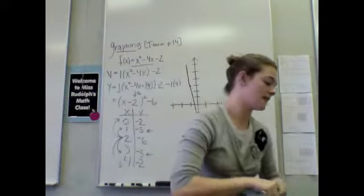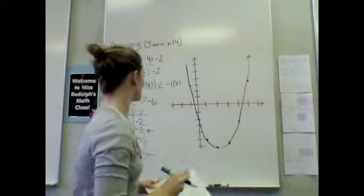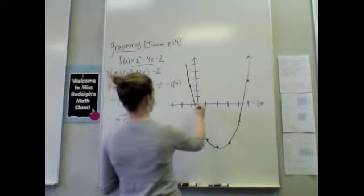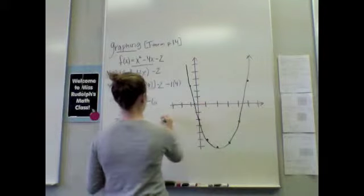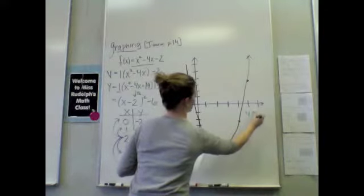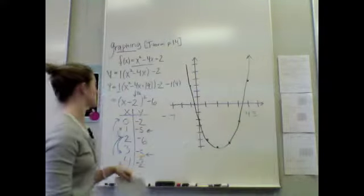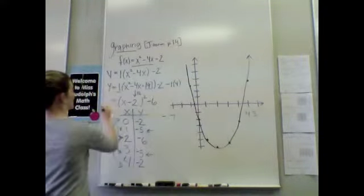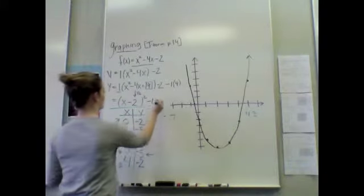We still need to estimate and find our x-intercepts. So, we're estimating here. This is approximately what looks like to me maybe negative 0.7, and this to me approximately maybe 4.3. But we need to find the exact. So, to find the exact...